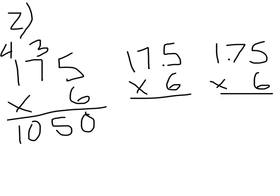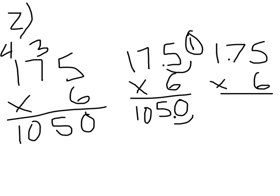Now let's multiply 17 and 5 tenths times 6. How many numbers are going to be behind the decimal in my product? One number will be behind the decimal in my product. I know that 175 times 6 is 1,050. Where should I place the decimal to make that answer correct? It should go between the 5 and the second zero so that one number is behind the decimal. My answer ends in the tenths place.